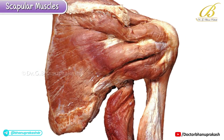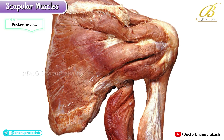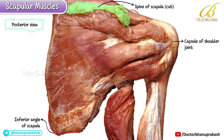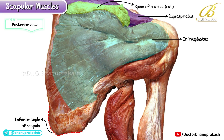This image presents the posterior view of the scapular muscles. On the lateral side, you can see the posterior surface of the humerus along with its muscular attachments. Superiorly, the spine of the scapula is clearly visible, though partially cut on its lateral aspect. The inferior angle of the scapula points downward. All of these scapular muscles blend with the capsule of the shoulder joint, together forming the rotator cuff, also known as the musculotendinous cuff. The muscle seen above the spine is the supraspinatus, while the muscle below the spine is the infraspinatus.